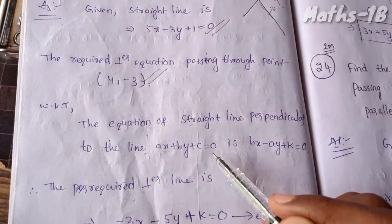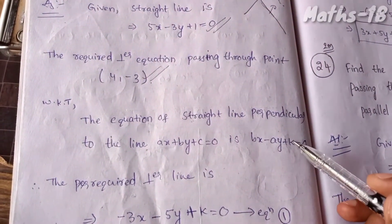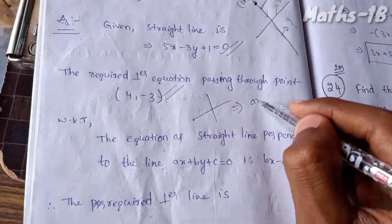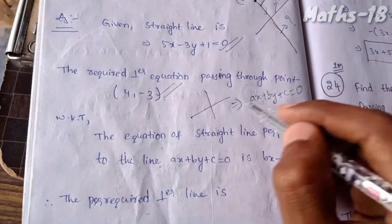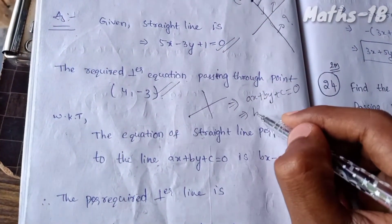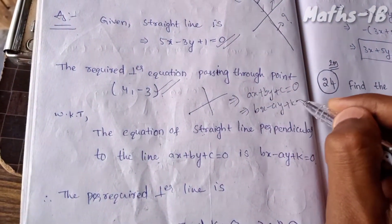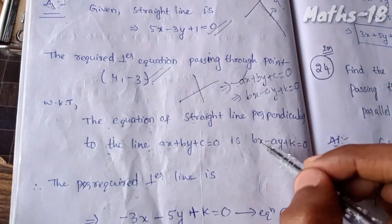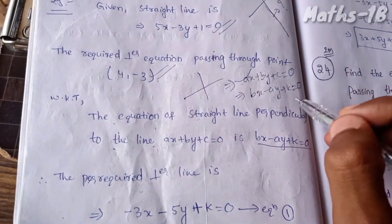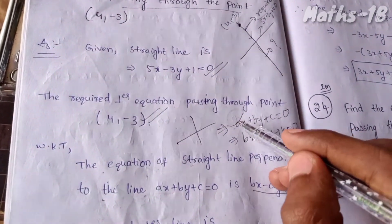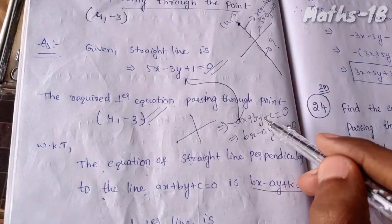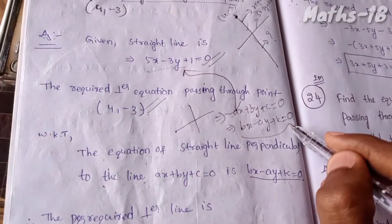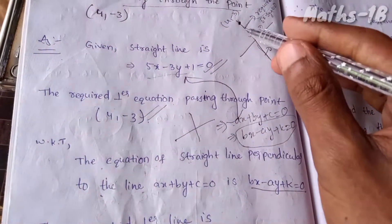The equation of the straight line perpendicular to the line ax plus by plus c is equal to 0 is bx minus ay plus k is equal to 0. So the required perpendicular equation is bx minus ay plus k is equal to 0.